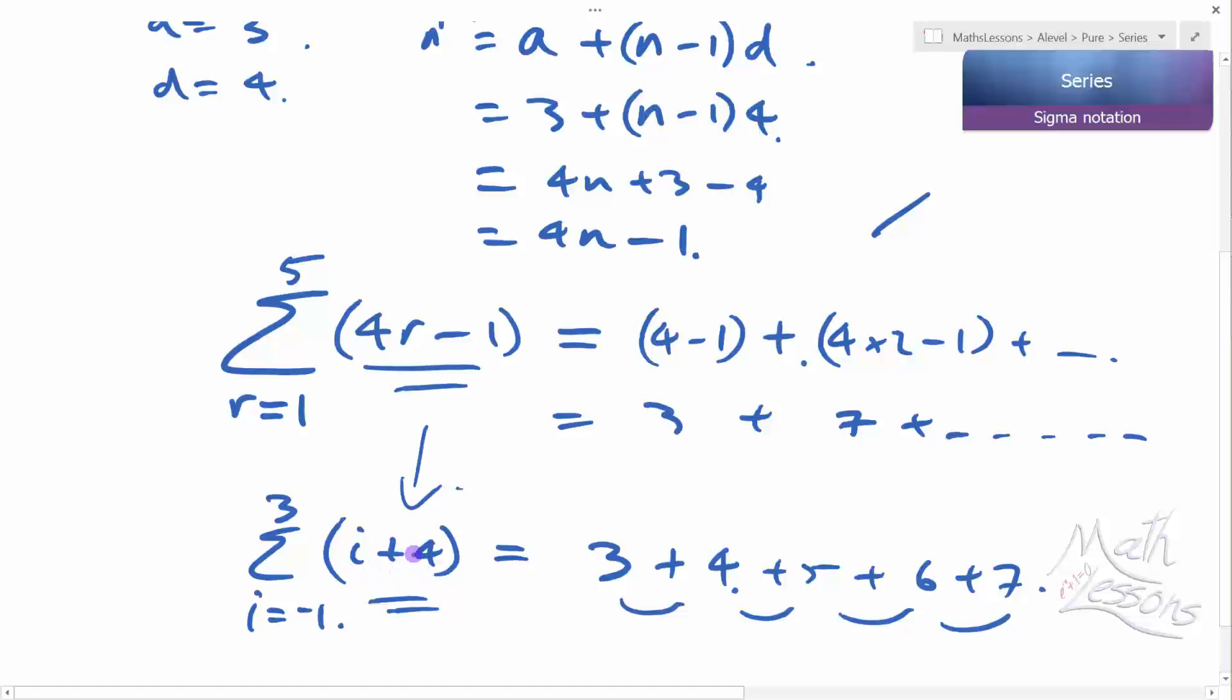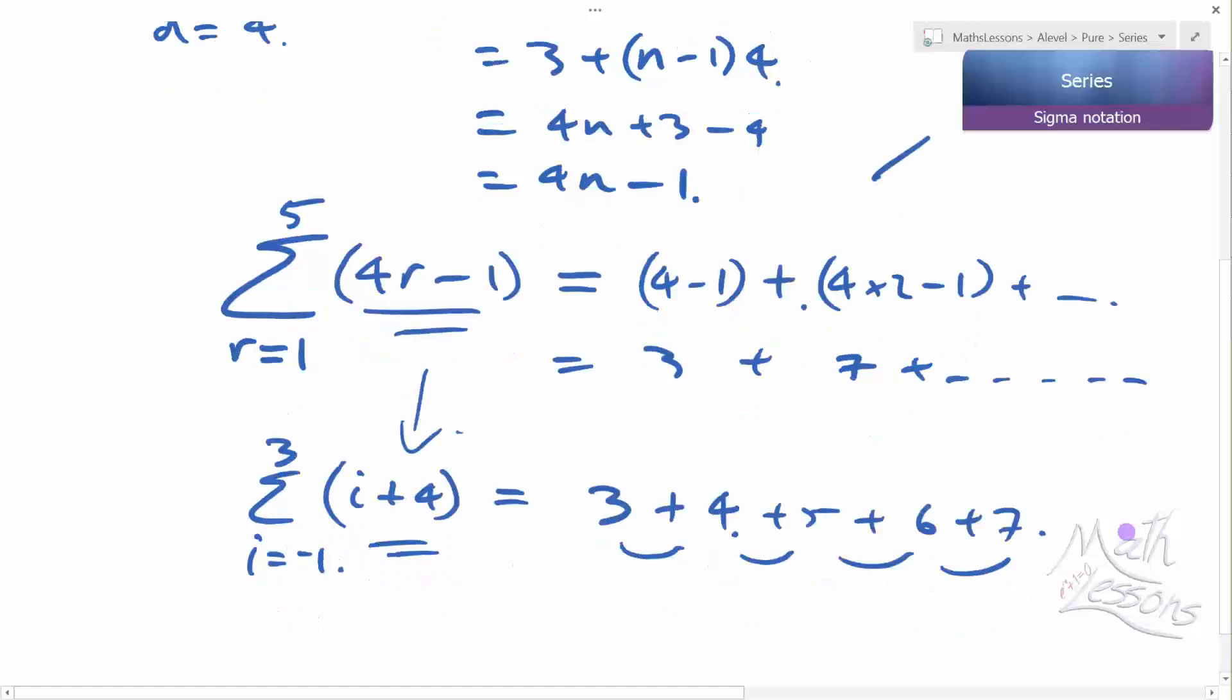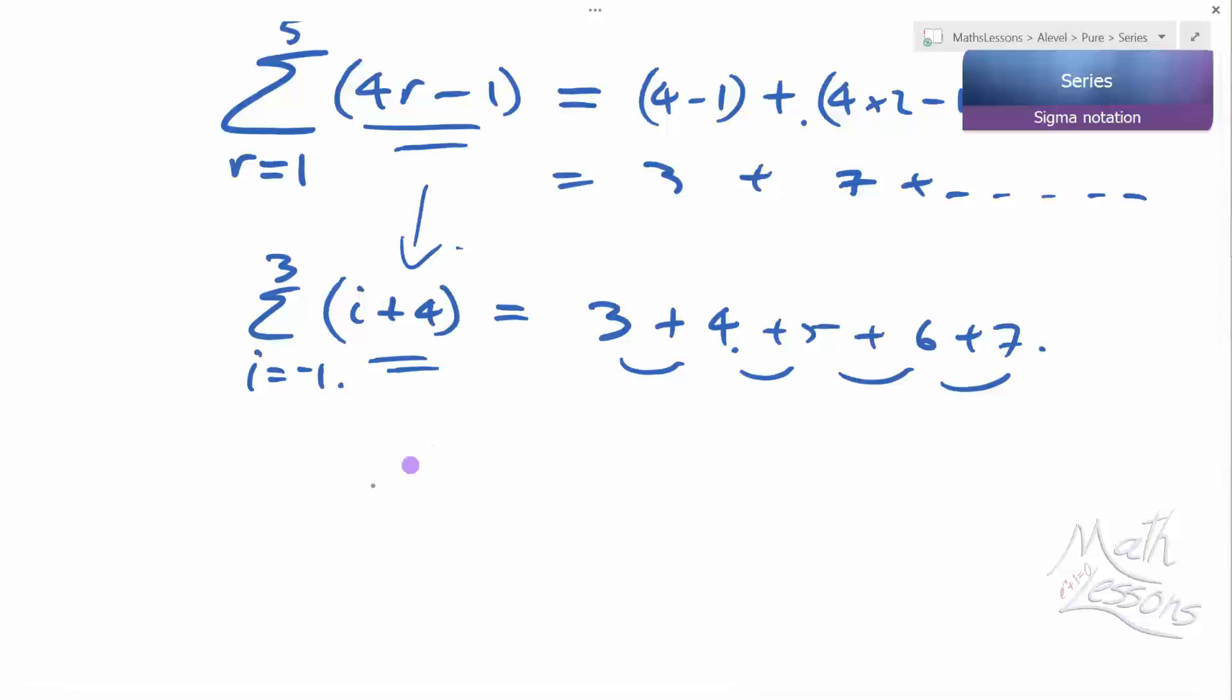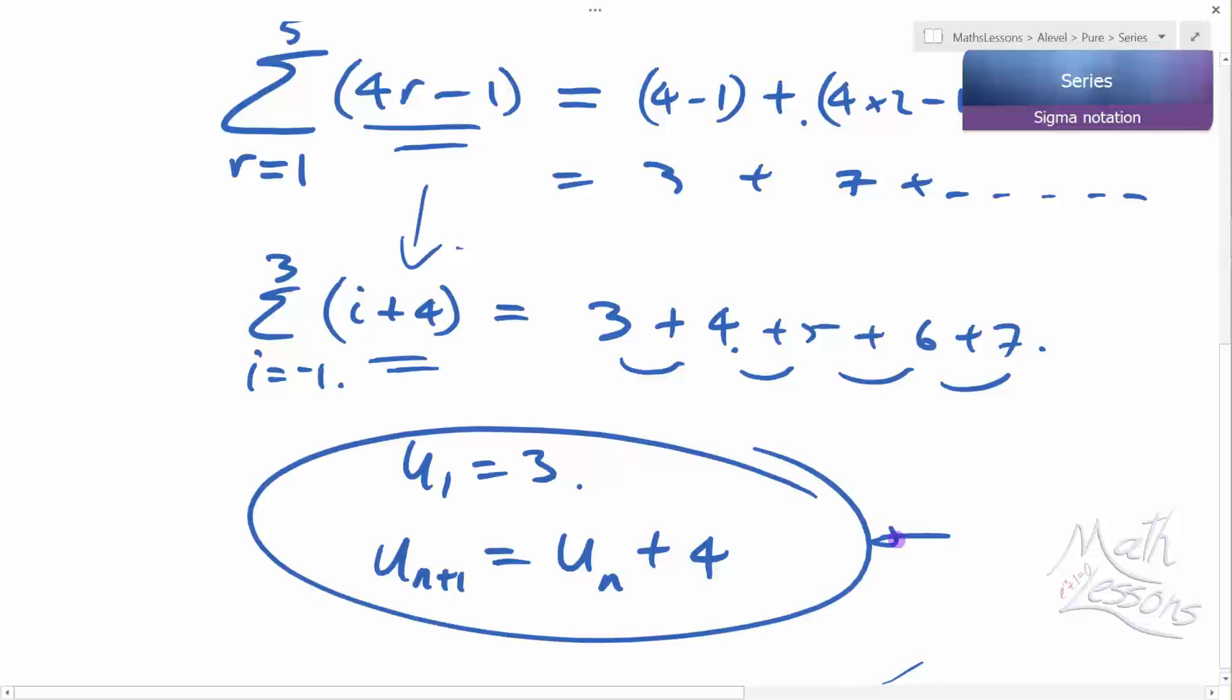This is what you would get if you were using an inductive definition. So, for example, if you had u₁ equals 3, and u_(n+1) would equal uₙ plus 4. So I take 3, put it in here, add on 4, I get 7. Take that 7, put it in here, add on 4, I get 11. And then I get my series this way. So you can see how students often confuse the inductive definition with the formula for the nth term.